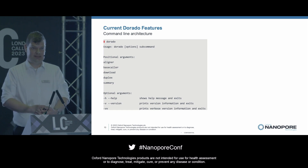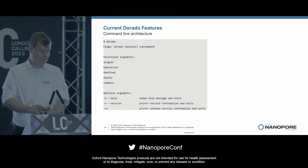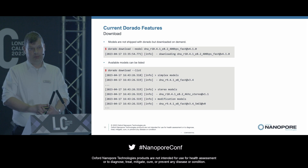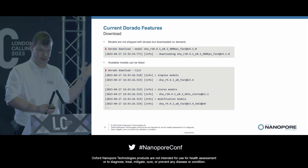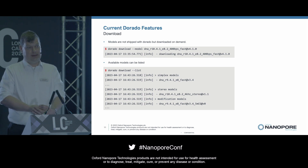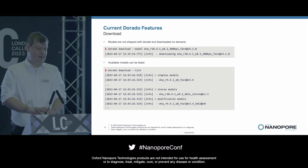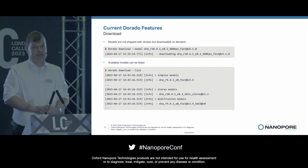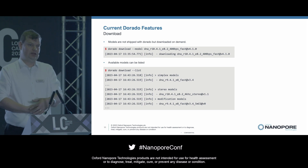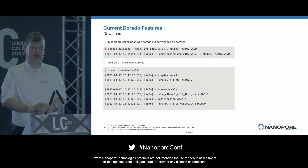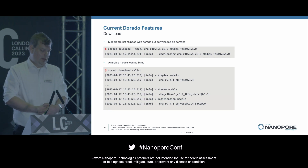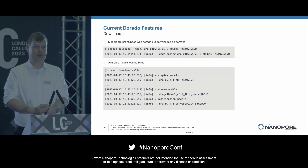Dorado ships as a single command line executable and it takes a positional argument for the task that you want to perform. The first thing you're probably going to want to do is download a model. You can use the Dorado download command, pass in the dash-dash model argument, and specify the model that you want. Dorado is a bit different to Guppy in that we don't package all the models with the base calling software — you just download the models that you want. If you don't know what models are available, the download command has a list argument that will give you all available models.